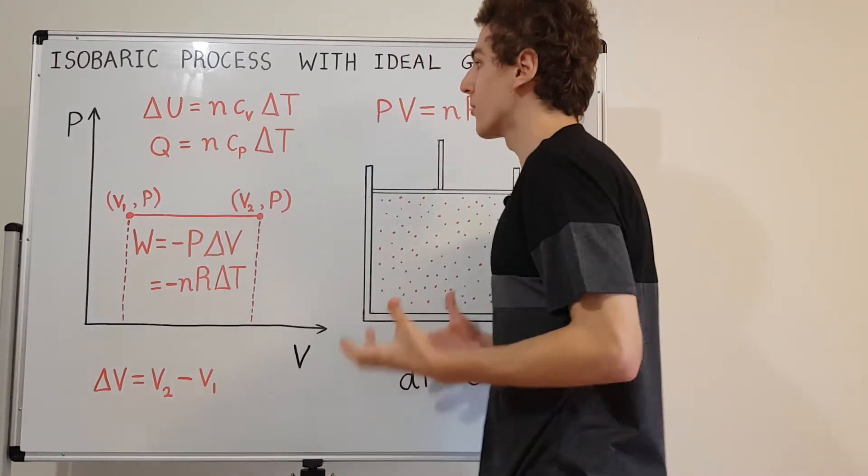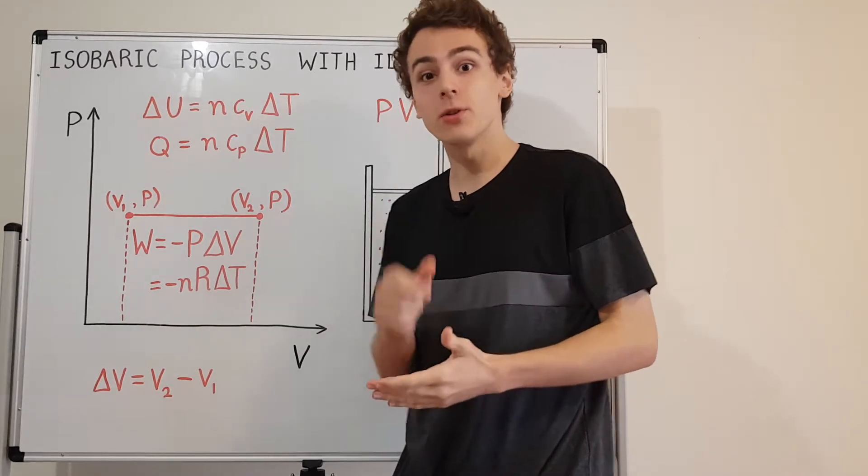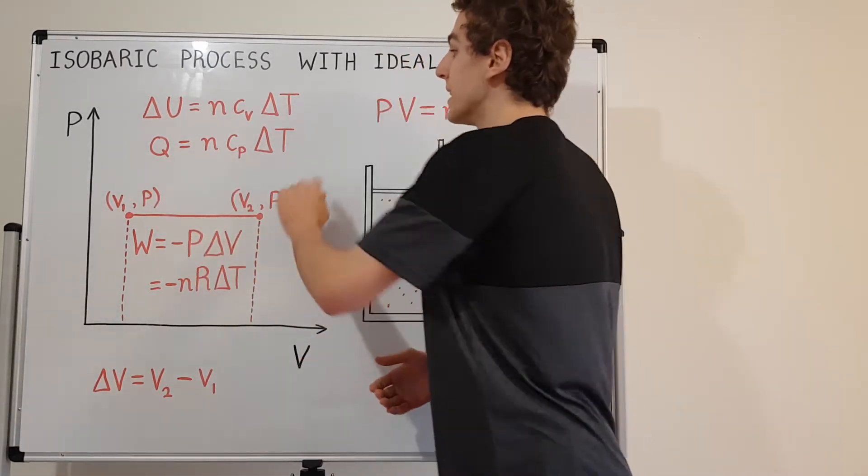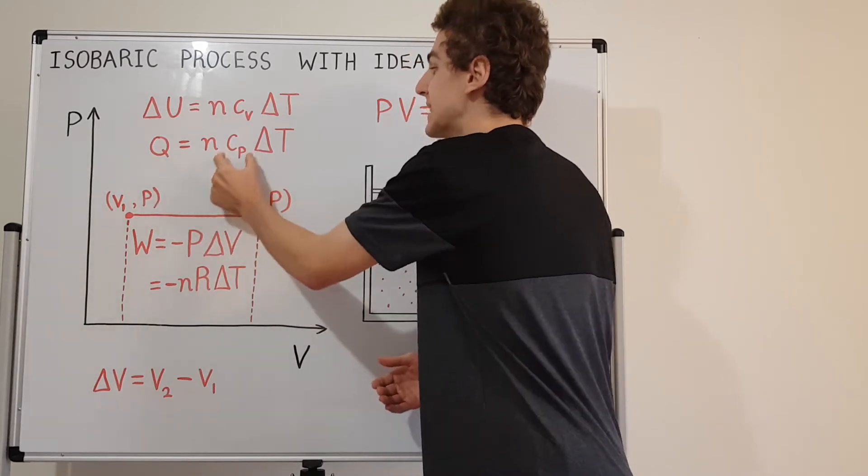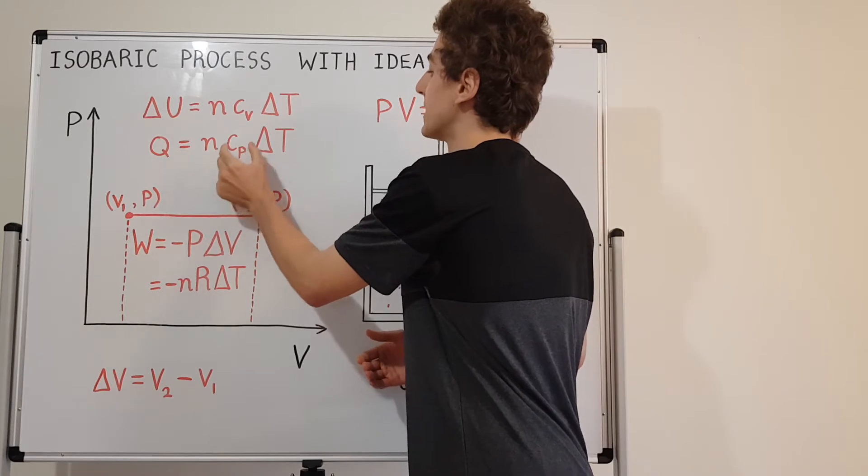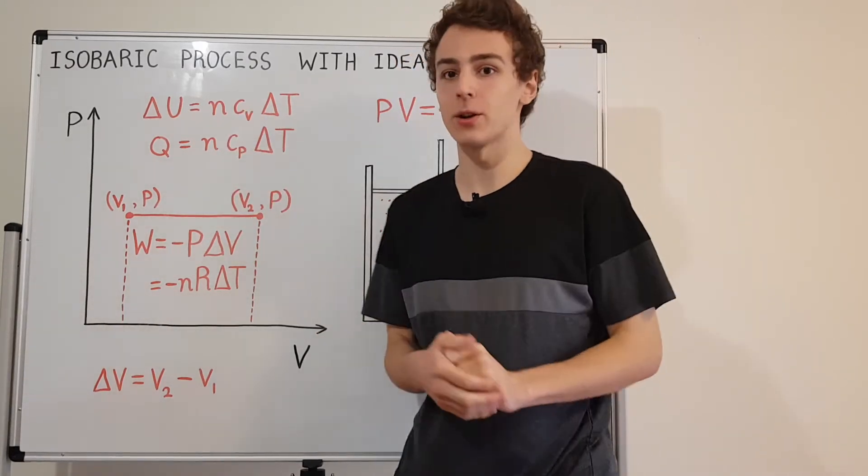You may be thinking, why is constant volume appearing here? Aren't we dealing with a constant pressure situation? Well the constant pressure situation is actually very clear in the heat equation. So the equation for heat is n Cp delta T. This over here is the specific heat capacity for constant pressure. But why do we have a Cv appearing up there?